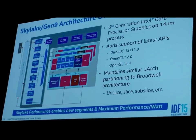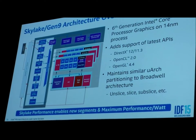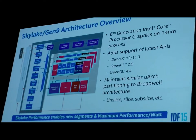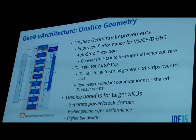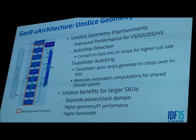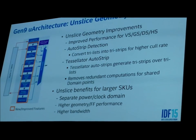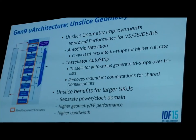The Gen9 architecture isn't a radical departure from Gen8. It's really composed of three major pieces: on the far left is the display block; then in the middle, the L-shaped gray area is the unslice; and then the big chunk in the middle is the slice. The unslice contains three important pieces: fixed-function geometry support, the interface to the memory fabric, and fixed-function media. The basic structure is really the same as what's in Gen8.